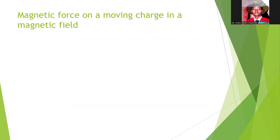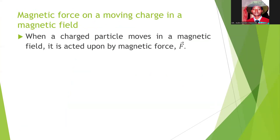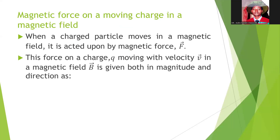Let's look at the magnetic field of a moving charge. When a charged particle moves in a magnetic field, it is acted upon by a magnetic force. If the charged particle Q moves with velocity V in a magnetic field B, the force is given both in magnitude and direction by equation 1.